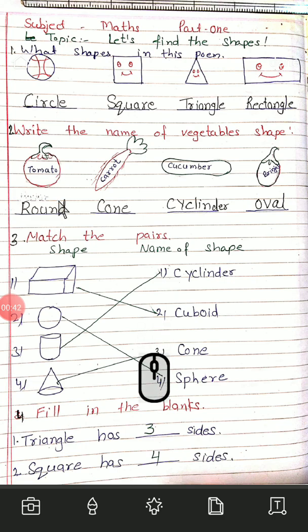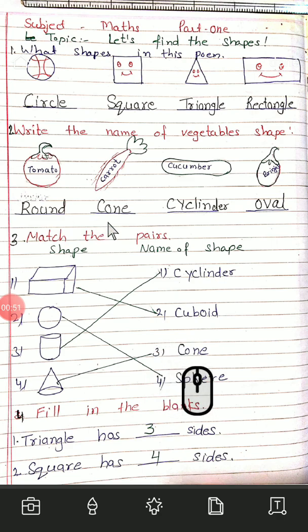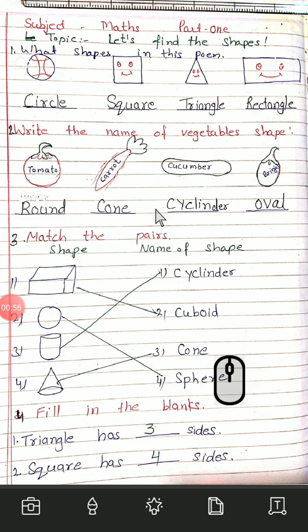Tomato is round shape. R-O-U-N-D. Round. Carrot — Carrot is cone shape. C-O-N-E. Cone. Cucumber — Cucumber is cylinder shape. C-Y-L-I-N-D-E-R. Cylinder.